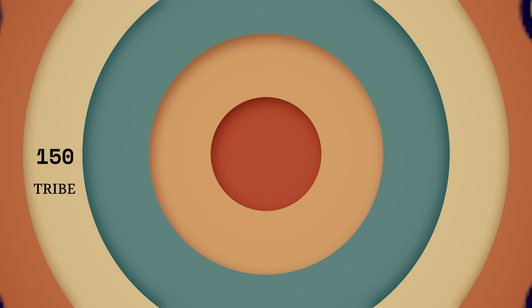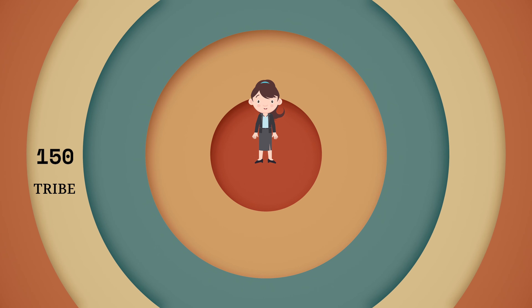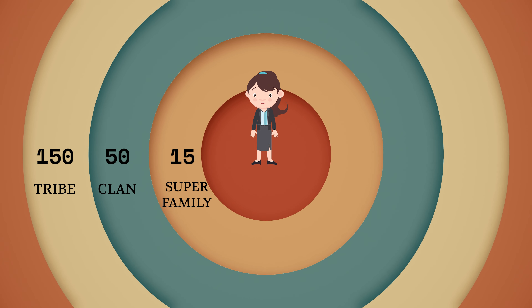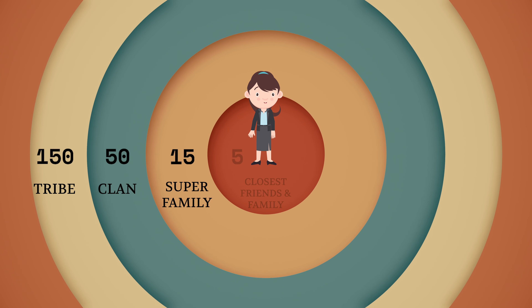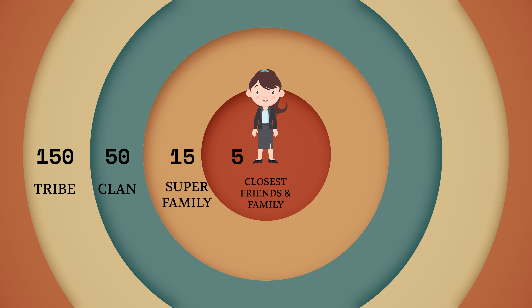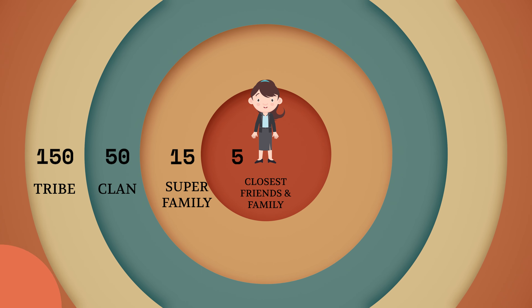150 people in a tribe — the people you know — can be broken down into 50 people, a clan of your real friends. 15 of those people make up your super family; those are your good friends. And five people make up your most intimate relationships: your immediate family and best friends. Each step into these smaller groups gains significantly more interaction and investment, the majority of which is spent with those five close friends or family. The majority of what's left is spread amongst your 15 good friends.